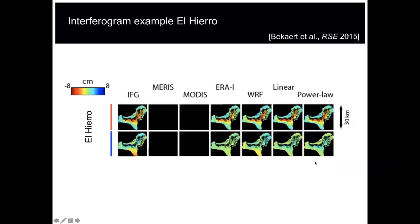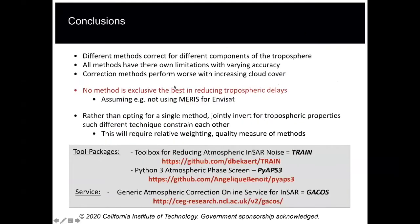We can also look at a small island — about 30 kilometers in size. Over a small island, most methods perform similarly because there isn't much spatial variation in the atmosphere. A topography correlation (linear or power law) gives a similar result as a weather model. The ERA-Interim resolution was 70 kilometers and HRES was around 9 or 10 kilometers. MERIS and MODIS had too much cloud cover — it's an island — so those were generally not available.